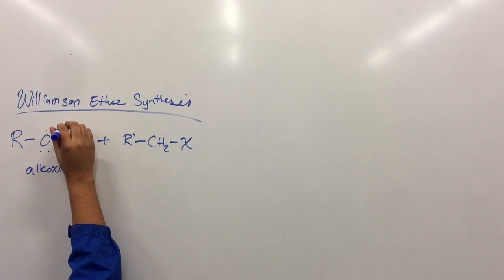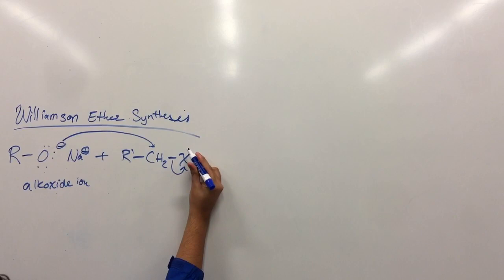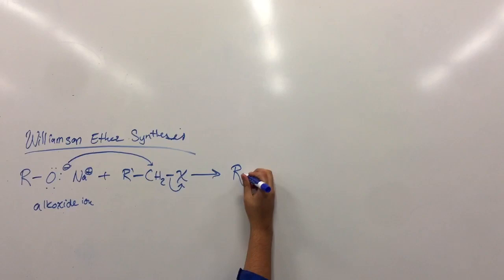The oxygen will donate electrons to the chain, which will transfer electrons over to the halide, allowing the halide to leave and creating a bond, which is an ether.